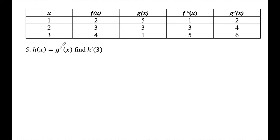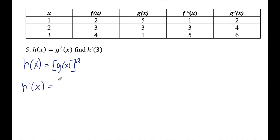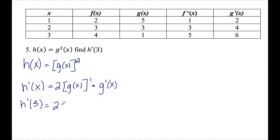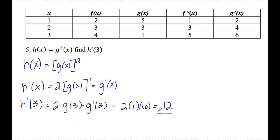Number five: h of x is equal to g squared of x. Find h prime of 3. I'll rewrite h of x — g squared means g of x squared. I can see that I need to apply the chain rule where g of x is the inside and something squared is the outside. To find h prime, I bring the exponent to the front — so that's 2 — leave the inside alone, drop the exponent by 1, times the derivative of the inside g prime of x. To find h prime of 3: 2 times g of 3 times g prime of 3. g of 3 is 1 and g prime of 3 is 6, so I end up with 12 as my answer for number five.